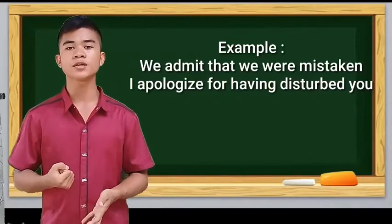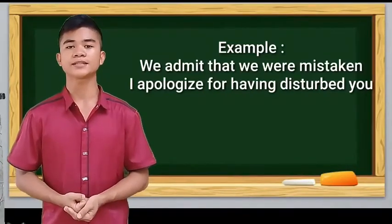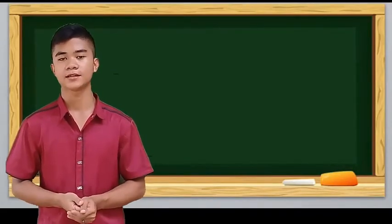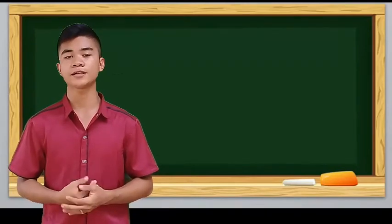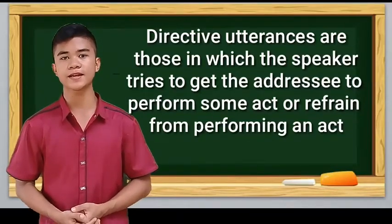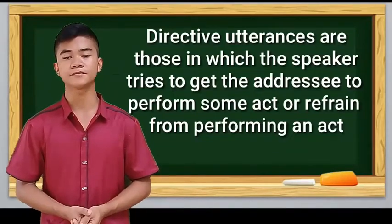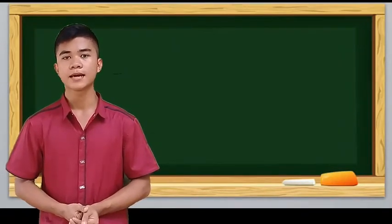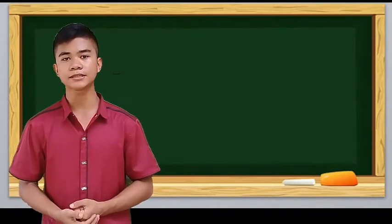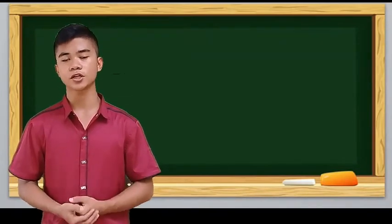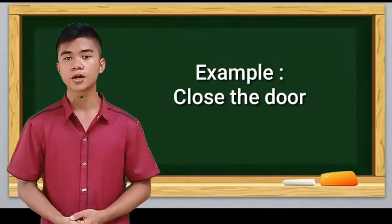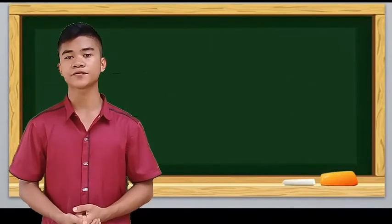Number five is directive utterance. Like from the topic, we know this is to direct someone. Directive utterances are those in which the speaker tries to get the addressee to perform some act or refrain from performing an act. The directive utterance has the pronoun 'you' as actor, whether the word is truly present in the utterance or not. Example of the directive words is: Close the door, or Please lift this 500 pounds.